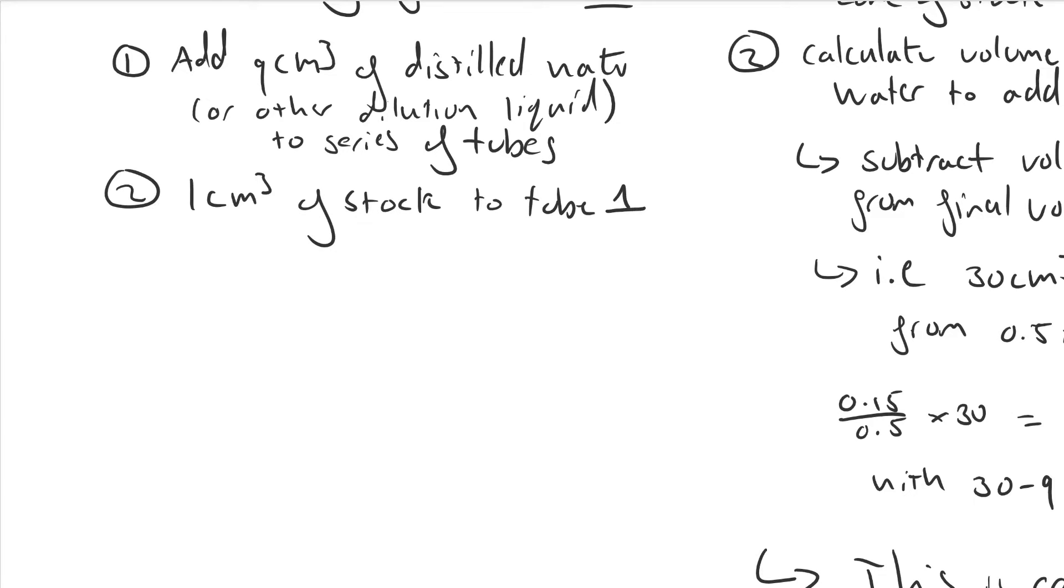Step 3: Mix it to make sure it's mixed up. Then if the stock solution had a concentration of 10% previously, then tube 1 contains a 1% solution. That's one-tenth of the total volume is stock solution.